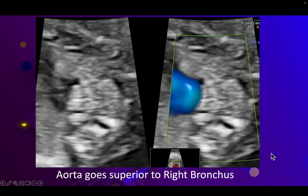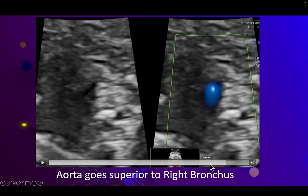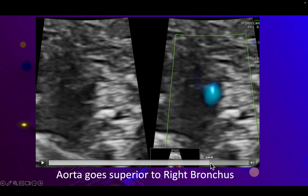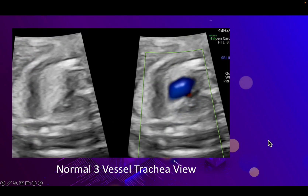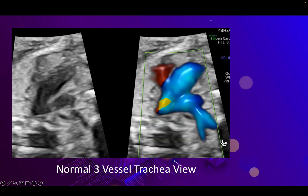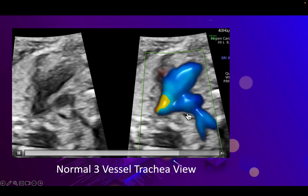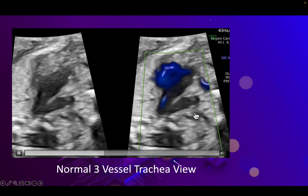In a normal situation, the bronchus generally does not come to the right of the aorta — the bronchus is usually posterior to the aorta. Here you can see the aorta, and the right bronchus is posterior, not to the right side of it. On reviewing the patient again today, it was very clear: this is a normal pulmonary artery, normal left-sided aorta, this is the trachea, and this is the subclavian artery going to the right — a normal subclavian artery.